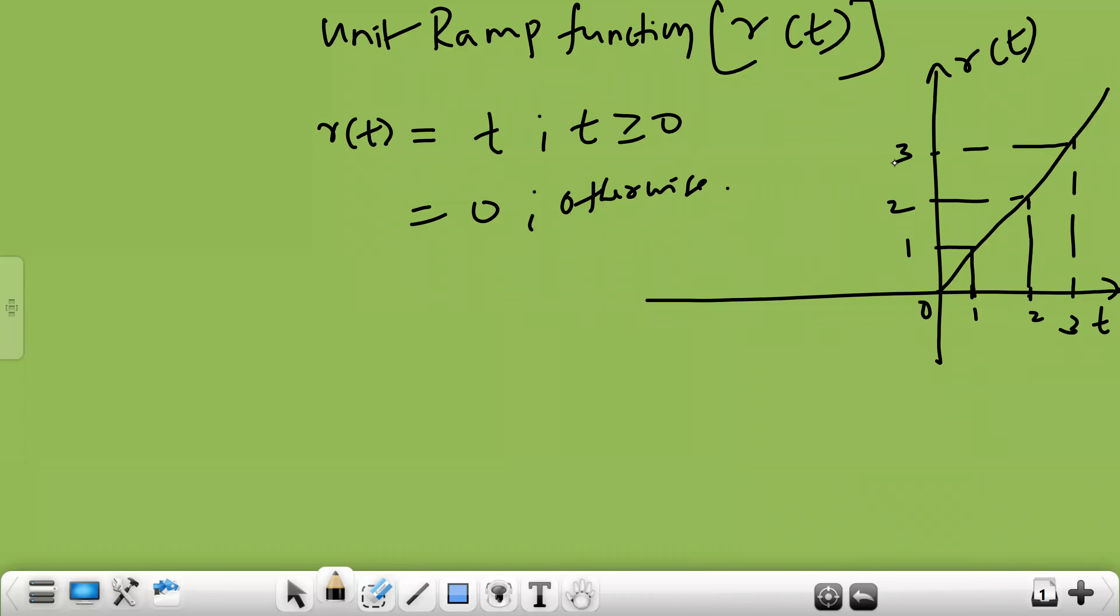So whatever you are plotting in the x axis, the same value will come over y axis. So x is equal to y or R of t equal to t, that is what is known as ramp function. For all other values, it is equal to 0.